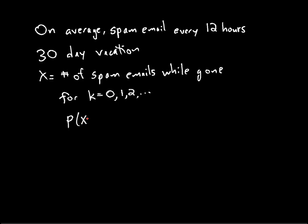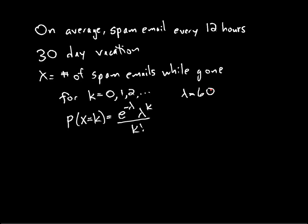For any of those K values, what's the probability that my random variable is equal to that K? Well, for a Poisson distribution, remember that it's E to the minus lambda, lambda to the K, over K factorial. Where lambda is the average — specifically, lambda is the average number of emails I would get on a 30-day vacation. Since I get an email every 12 hours and there are 30 days, that means there are 60 twelve-hour periods, so I would expect to get 60 emails. In this case, lambda equals 60.